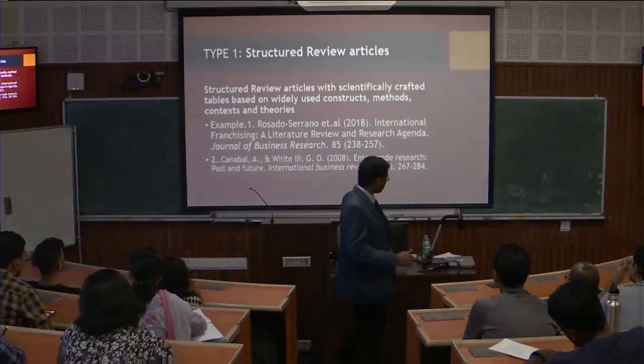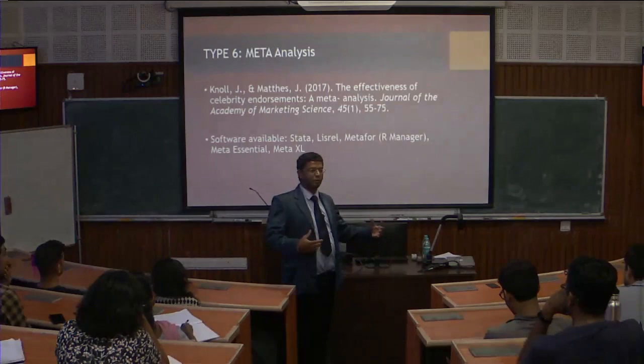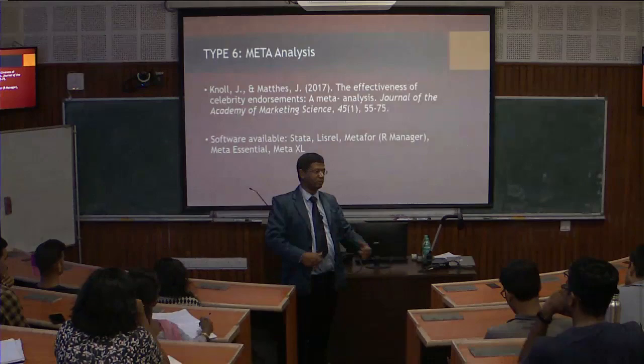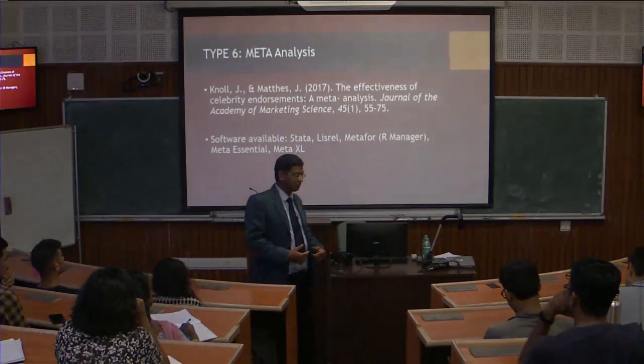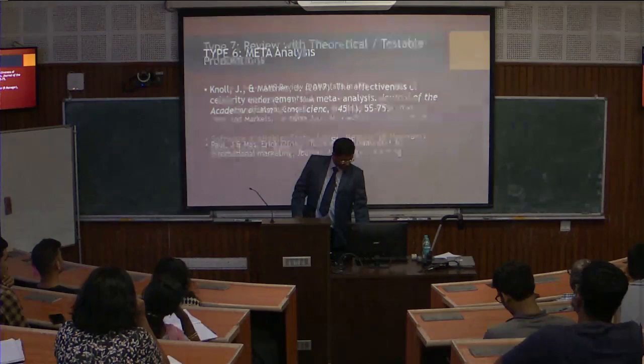I will now quickly classify review articles into seven types. The first is structured review. The second is meta-analysis — for example, 'effectiveness of celebrity endorsement.' Most meta-analysis papers involve relationship testing: you collect papers focused on cause-and-effect relationships with a dependent and independent variable on a specific phenomenon, select 60 to 80 papers with that specific focus, and then use meta-analysis software such as Stata, Meta, Excel Meta, or CMA Essential. This is a different type of review article.